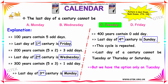The only days which cannot be the last day of a century are Tuesday, Thursday, and Saturday. Among the given options, only Tuesday is available, so the answer is option C: Tuesday cannot be the last day of a century.